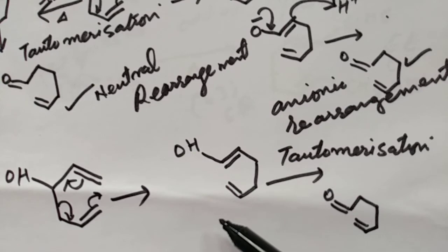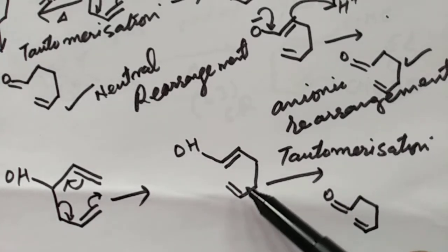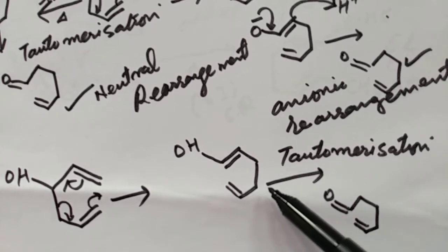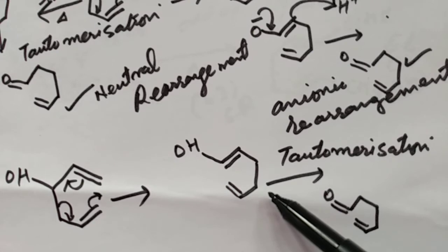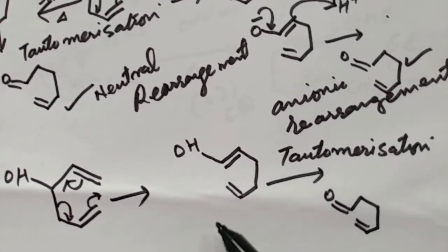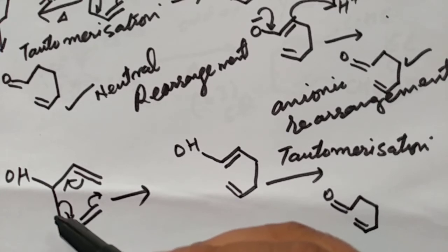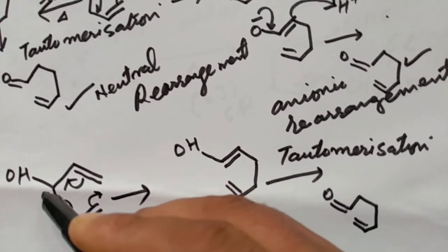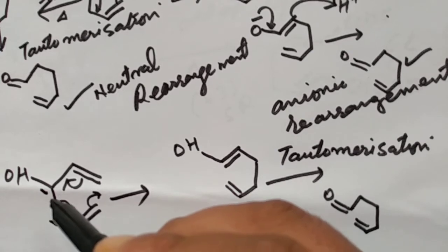This oxy-cope rearrangement is a variation of cope rearrangement in which a carbonyl compound is formed by a mechanism typical of a 3,3-sigmatropic rearrangement. In this case, both ends of the old sigma bond are numbered as 1.